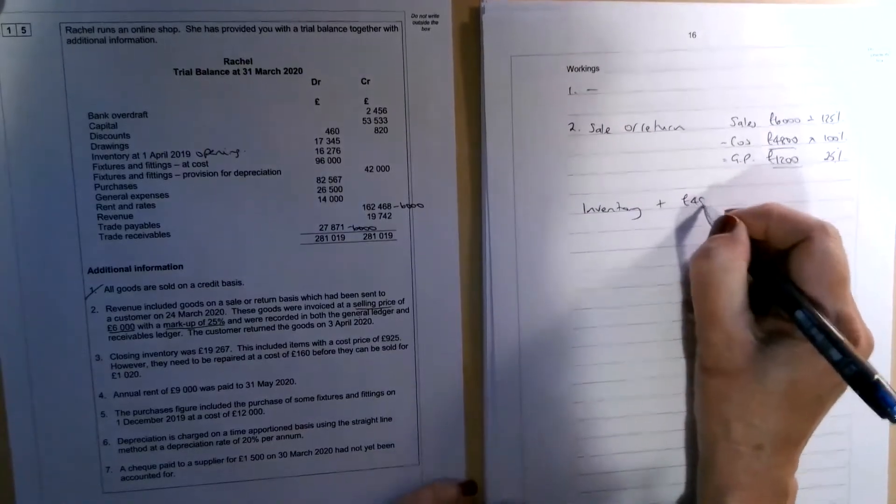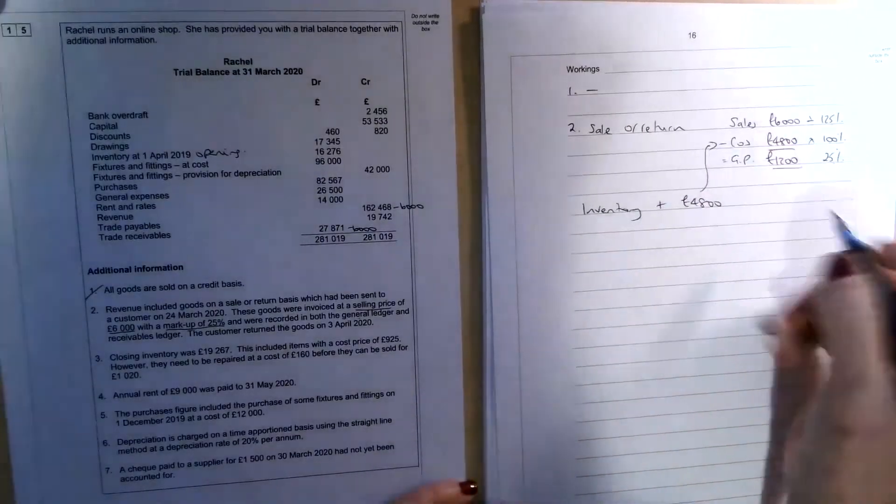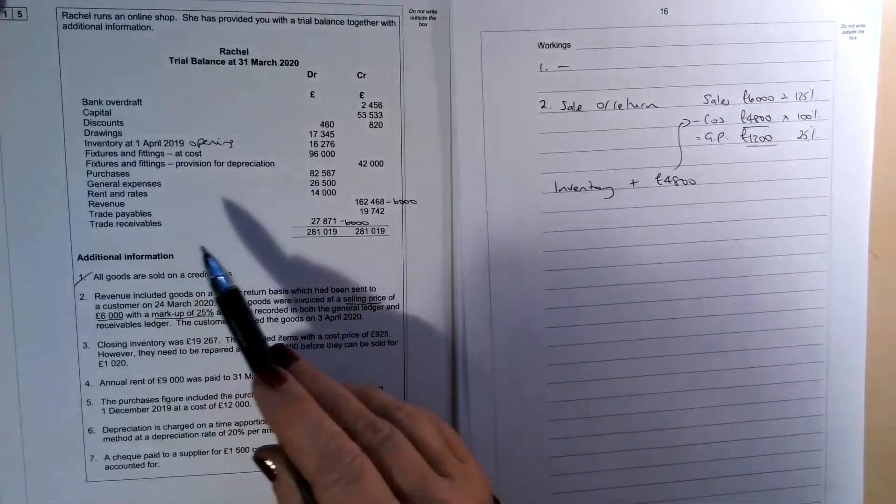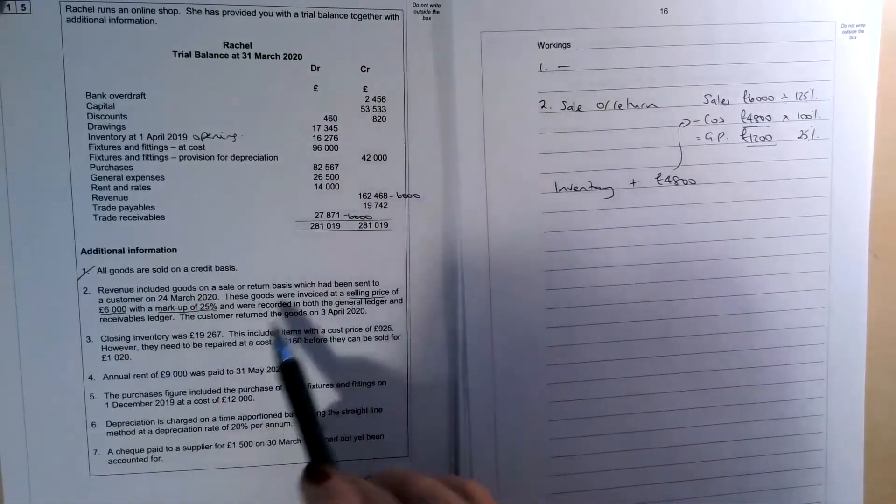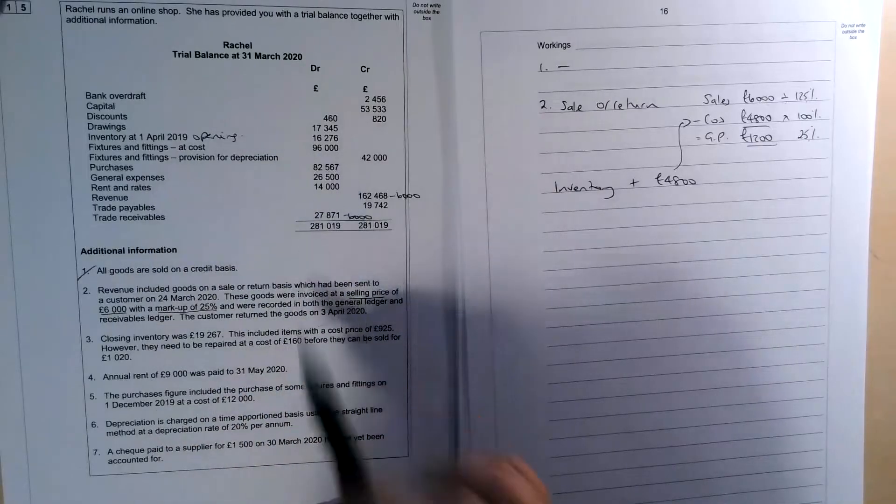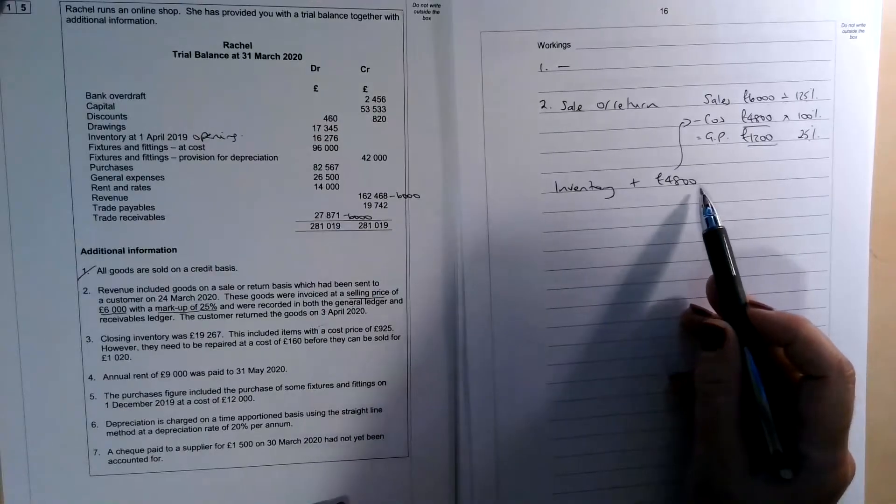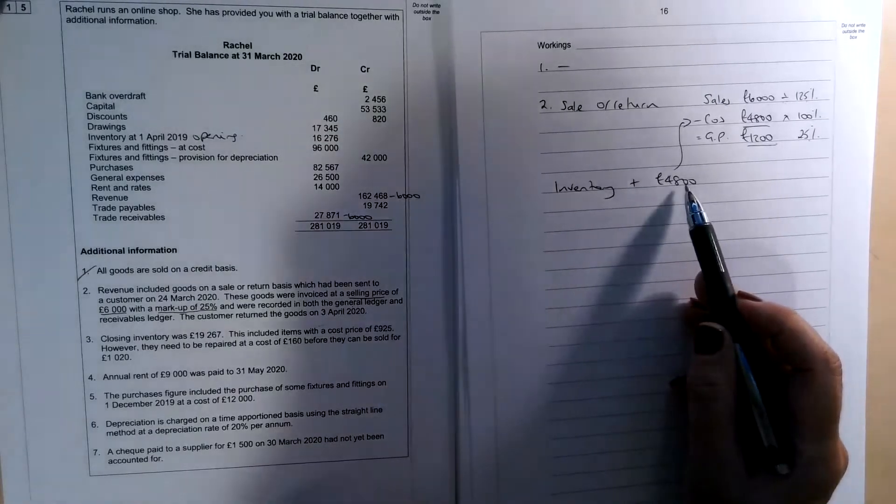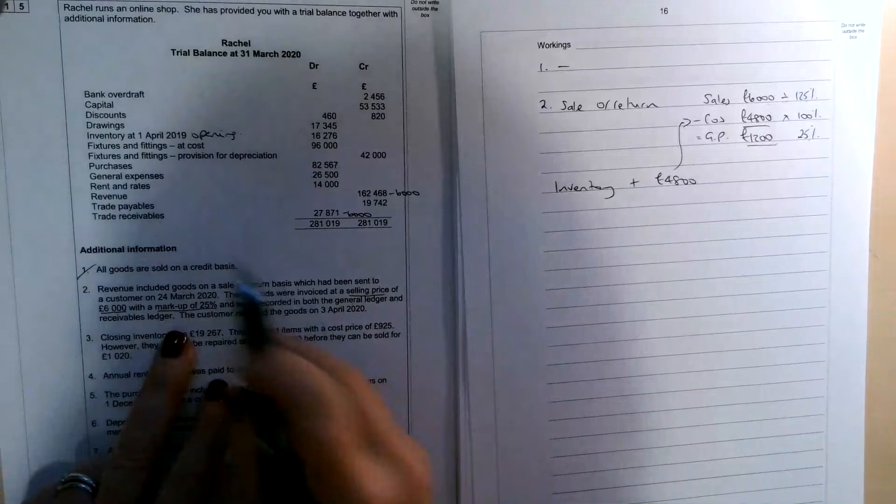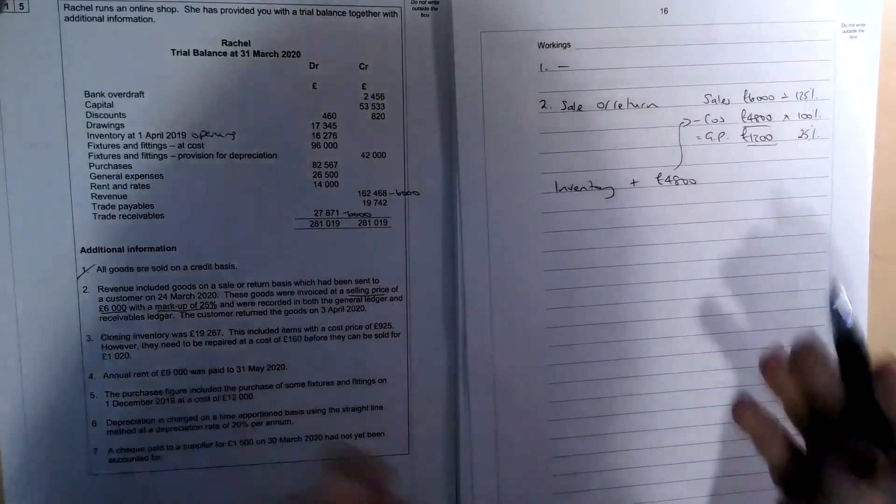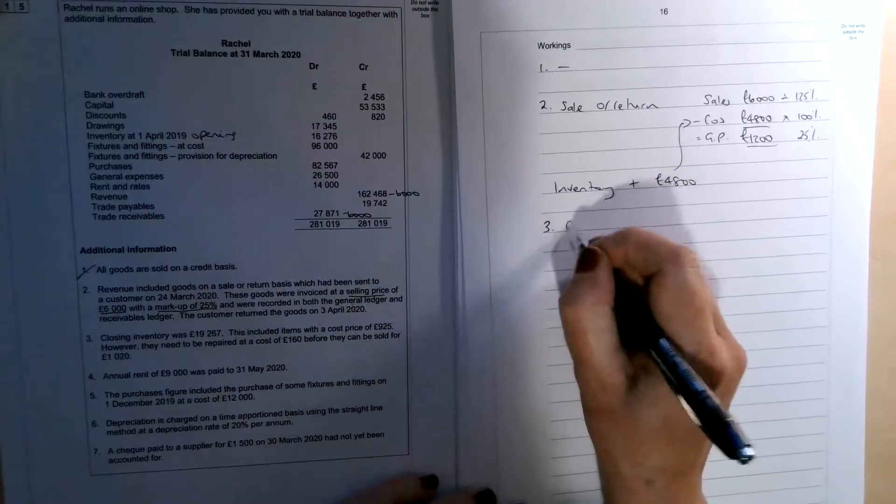So we need to add £4,800. That's the cost of the goods that were sent on a sale or return basis because they were with the customer. It doesn't expressly tell us that, but we can assume that they were missed out of the inventory because the sale had been recorded, then that inventory wouldn't have been included. So we need to add that back to the closing inventory figure, which obviously isn't in the trial balance. It's only the opening inventory up there. But number three, we can work out closing inventory.